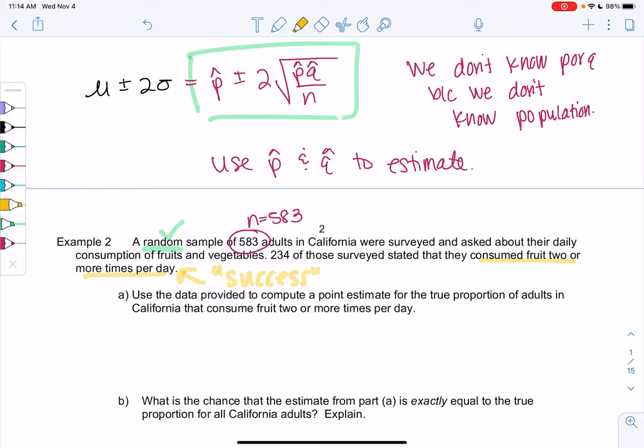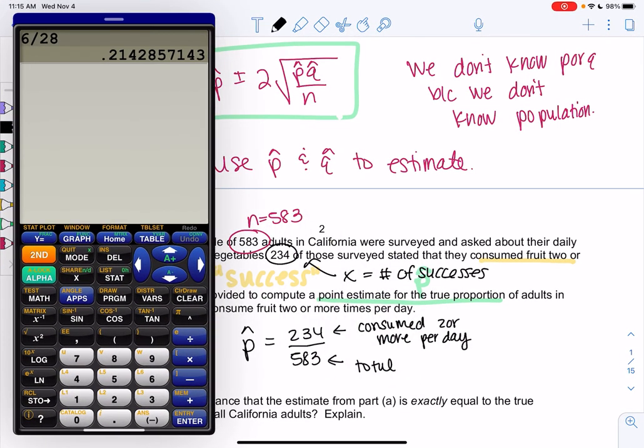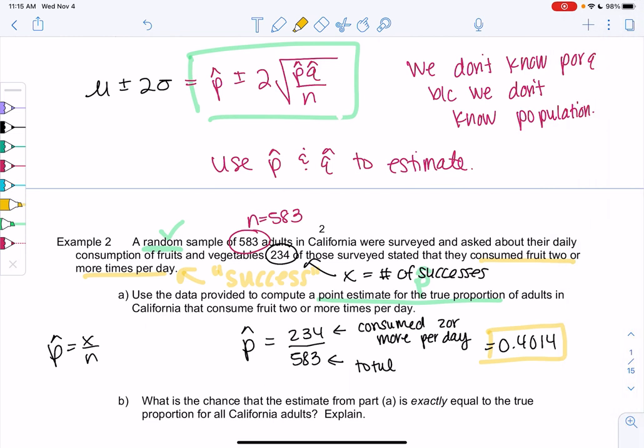Let's use the data to find a point estimate for the true proportion. So a point estimate for the proportion just means p hat of adults who consumed fruit two or more times per day. We'll put the total which is 583. We also learned the formula where p hat was x over n, so 234 is my x, my number of successes, out of n which is the total. Or we could just think of it in words: 234 out of the 583 total. So let's see what we get. 234 out of 583 and we get 0.4014. I like four decimal places. So about 40% are consuming fruit two or more times per day.